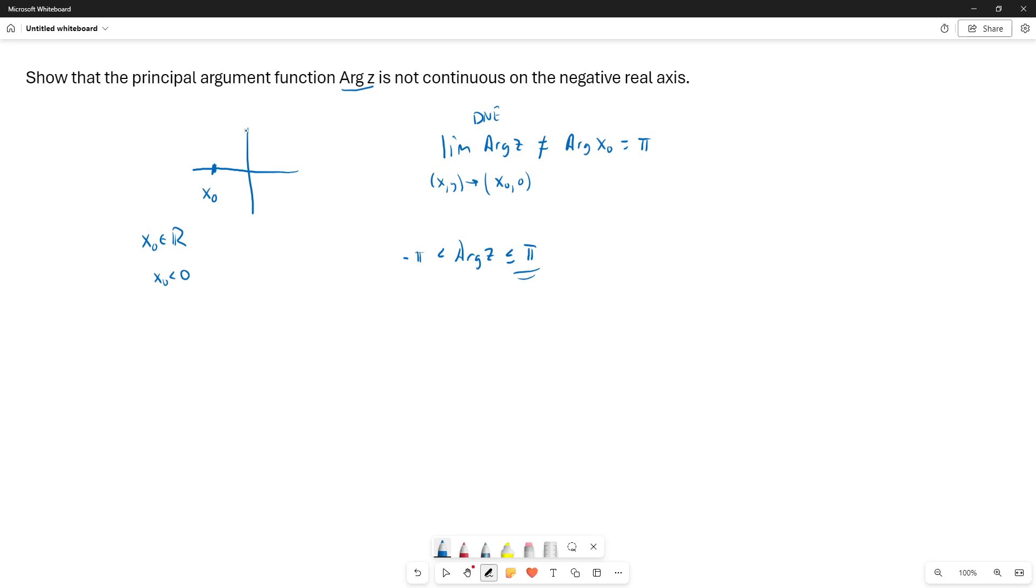Okay, so to show that the function is not continuous, we will consider two different paths. Let's consider a circle centered at the origin of radius absolute value of x0, so that the circle goes through x0, and let's consider a point (x,y) headed towards our point (x0, 0) along the upper half of the circle, and then another path along the lower half.